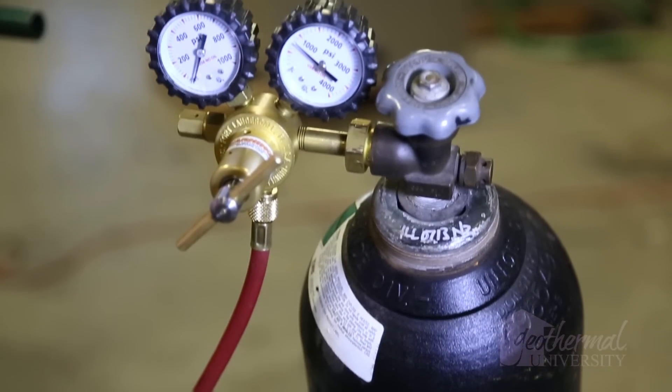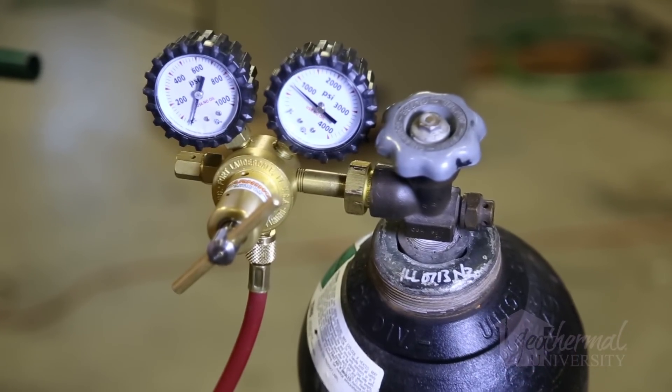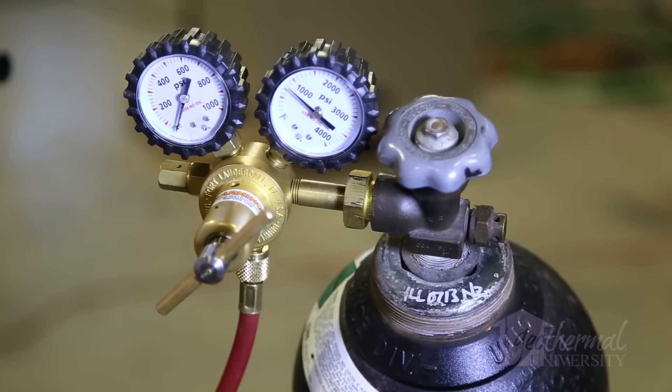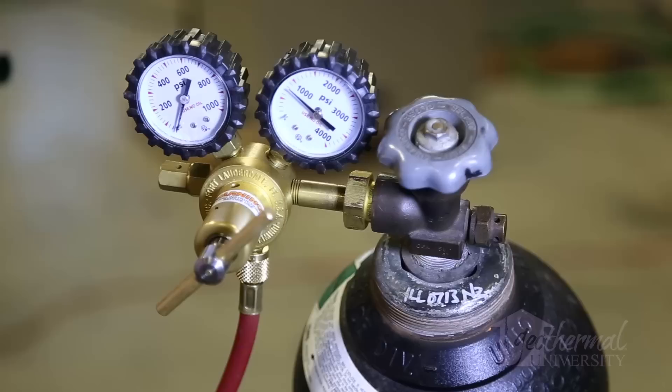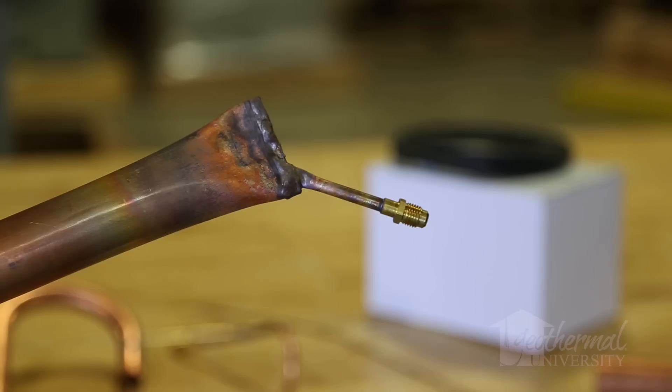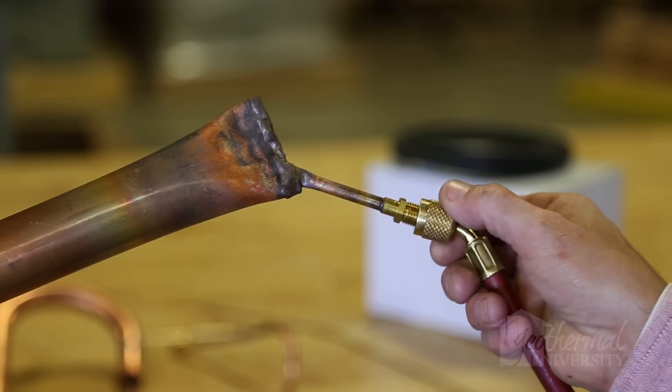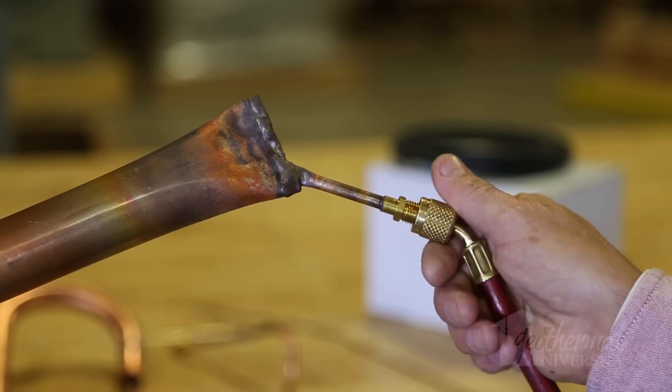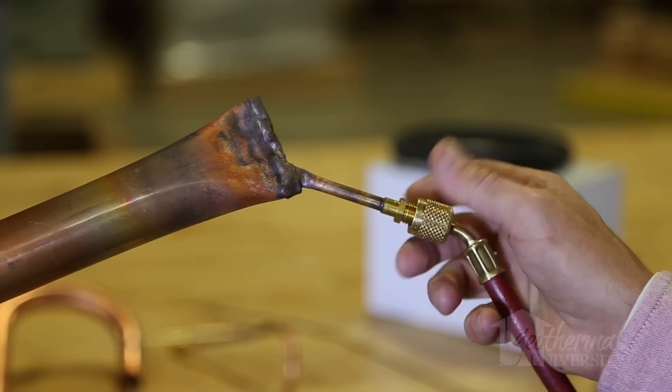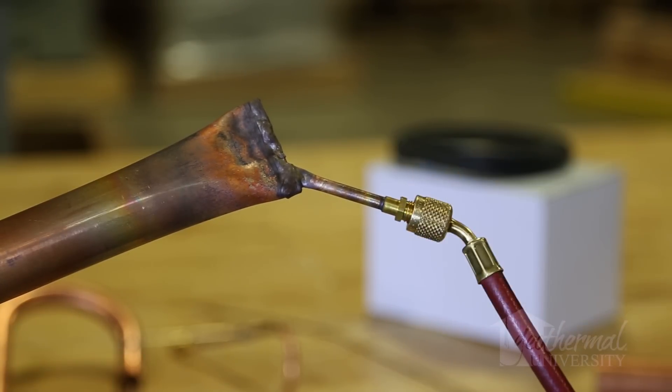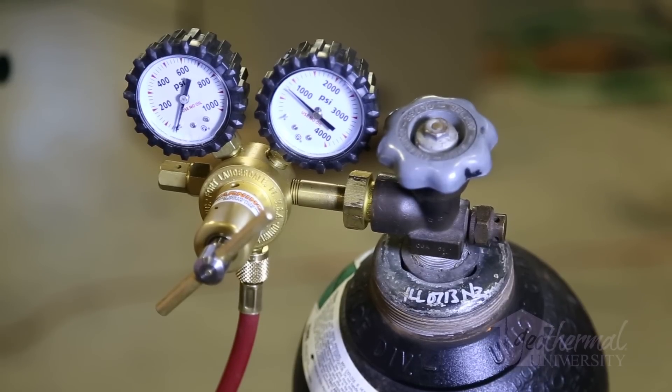Nitrogen is typically introduced into the system through the Schrader valve after removing the core or other system opening. Connect the hose or tube from the nitrogen cylinder to tubing or refrigerant port. The cylinder will be equipped with a regulator or flow control valve.